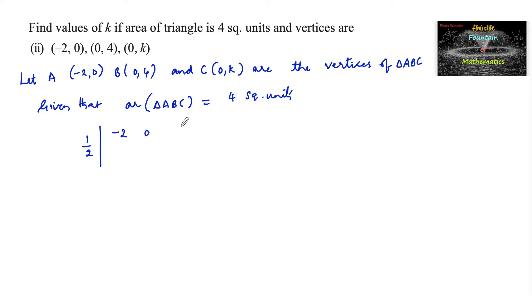That is minus 2, 0, and 1; then 0, 4, and 1; and x3, y3, and 1, that is 0, k, and 1, which is equal to 4 square units. So 1 by 2 times the modulus of this determinant.